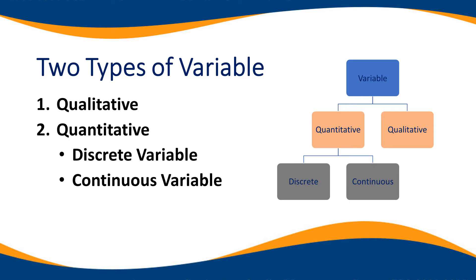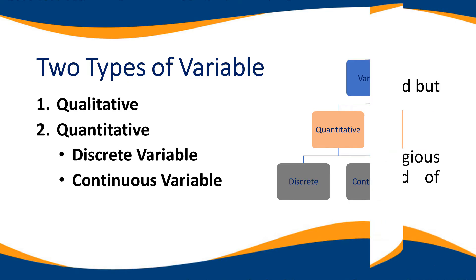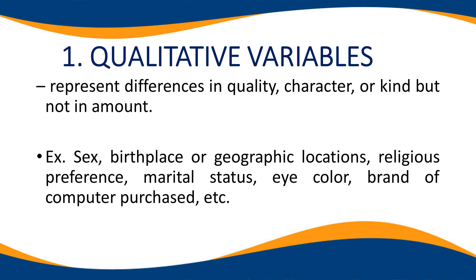Number one is qualitative and number two is quantitative. Under the quantitative variable, it has discrete variable and continuous variable. When we say qualitative variables, they represent differences in quality, character, or kind but not in amount — like sex, birthplace or geographic locations, religious preference, marital status, eye color, brand of computer purchased, etc.